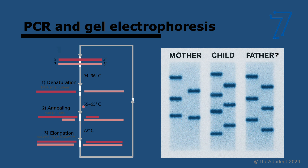Once the strands separate, we cool it down a little, and then primers bind. Primers are small sequences of bases that attach to the DNA and allow replication to start. They also allow you to select which part you want to replicate — depending on which primer you select, you can choose different parts of the DNA. Then you heat it up again and the new strand is assembled from the primer, elongating in both directions.